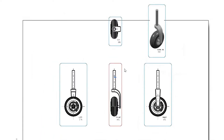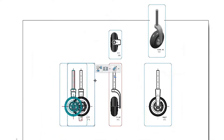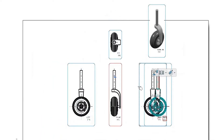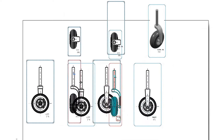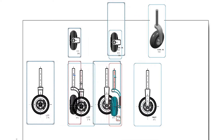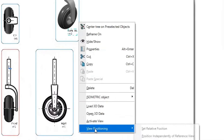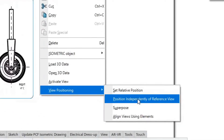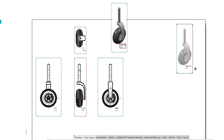The isometric view will now be colored in. Finally, we will position all the views so they fit on the page. Remember that we can position the isometric view independently in the top right corner of the page.